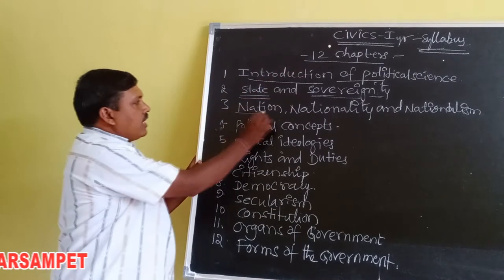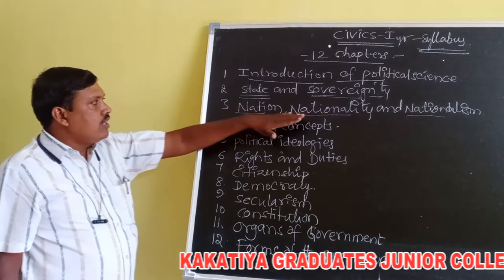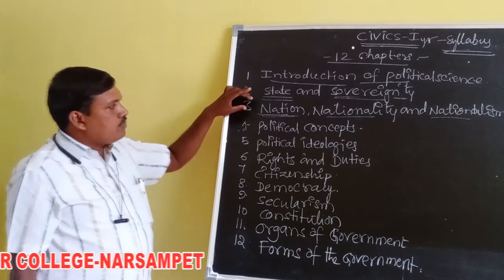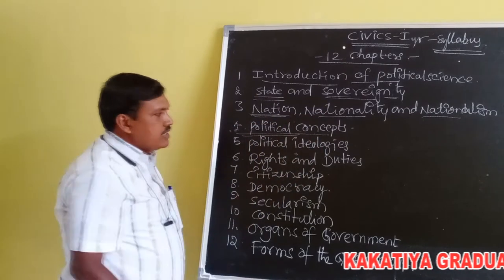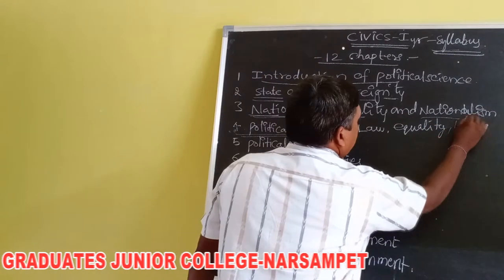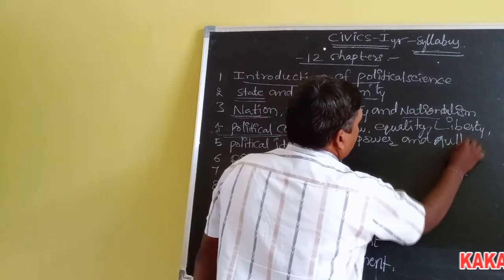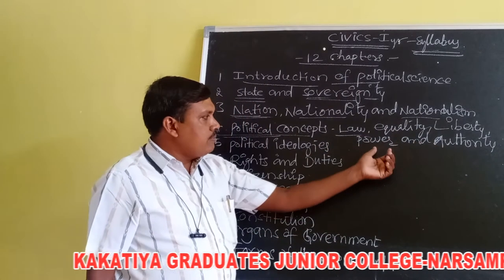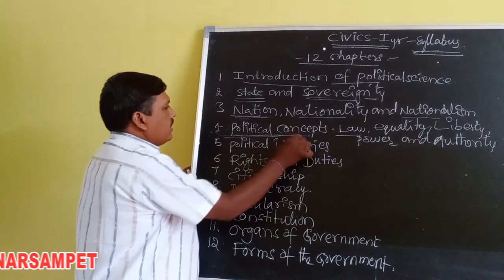The third chapter is Nation, Nationality, and Nationalism, where we will learn how a nation is formed and what kinds of nations exist. The fourth chapter is Political Concepts, under which we will study law, equality, liberty, power, and authority.